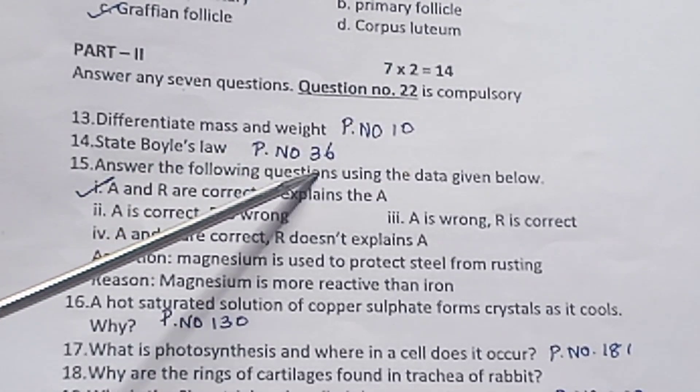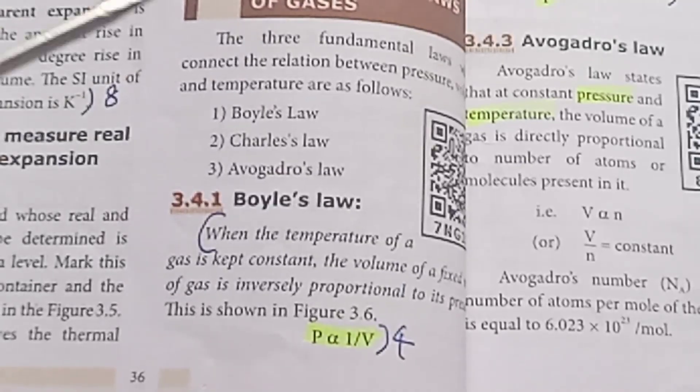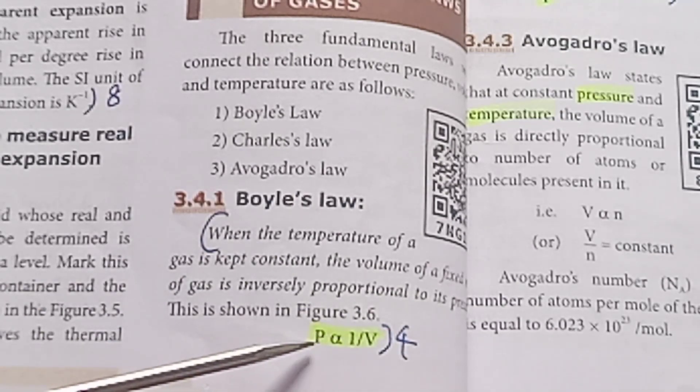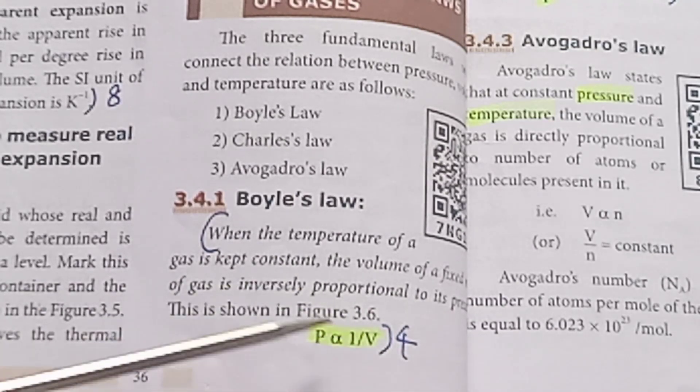Question 14: State Boyle's law. Page number 36. When the temperature is constant, start with the equation. P is pressure, V is volume.